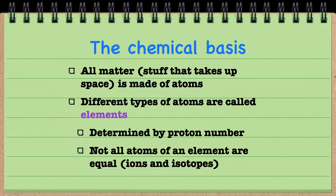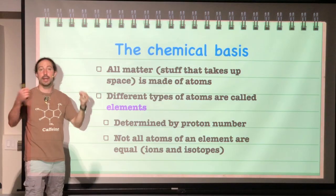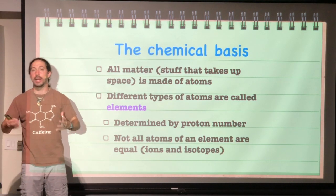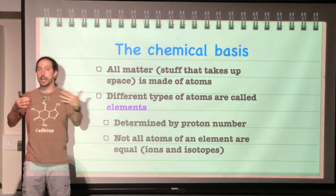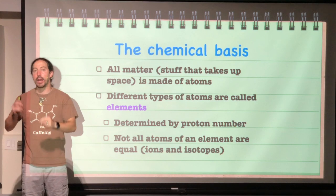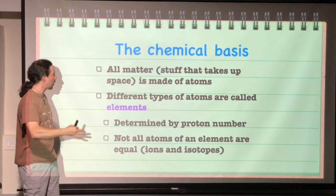And all matter, as we said, is made up of these things called atoms. And the atoms are all separated by what we call elements. And the atoms are all categorized by what element they are. Now the atoms are categorized in this way by how many protons are present.